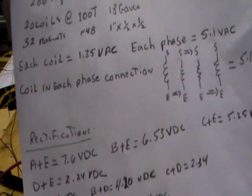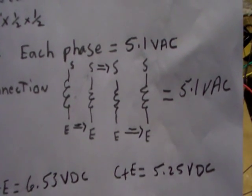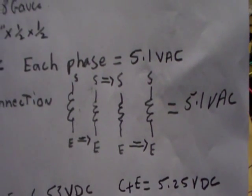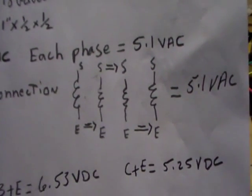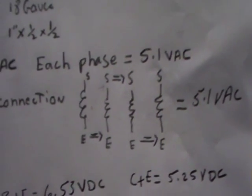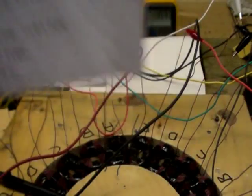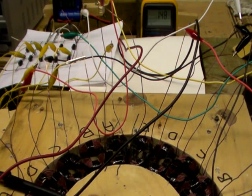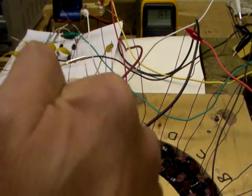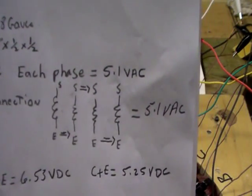But the connections for the coils in each phase are connected like so. S for start, E for end. So end to end, start to start, end to end. That's how it's actually connected. The first start is to the neutral point, which is right here. All five connected like that. So the result is 5.1 AC voltage.